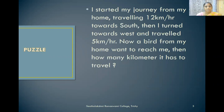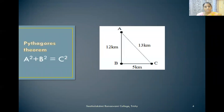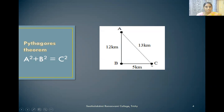We can find the solution of this puzzle by using a famous theorem called the Pythagoras theorem. We all know what the Pythagoras theorem is: A squared plus B squared is equal to C squared. So I started my journey from point A and traveled 12 kilometers towards south to reach point B. From there, I turned towards west and traveled 5 kilometers to reach point C. Now a bird from my home wants to reach point C — that is me. It is 13 kilometers.